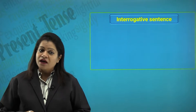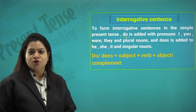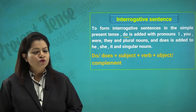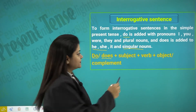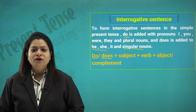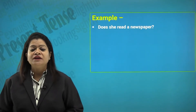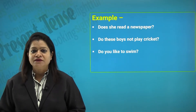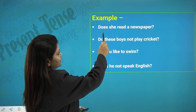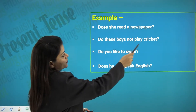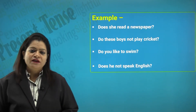To form interrogative sentences in the simple present tense, we add 'do' with pronouns I, you, we, they, and plural nouns, and 'does' with he, she, it, and singular nouns. The structure is: do/does + subject + verb + object or complement. Examples: 'Do you like tea?' 'Does he come here every day?' 'Does she read a newspaper?' 'Do these boys not play cricket?' 'Do you like to swim?' 'Does he not speak English?' In interrogative sentences, we can also have affirmative and negative forms.